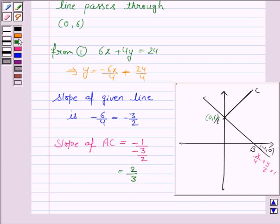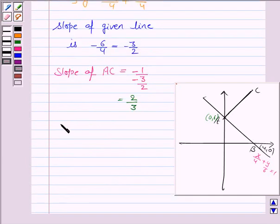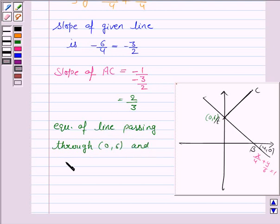Now we know the required line passes through point (0, 6) and has slope 2/3. So the equation of the line passing through (0, 6) with slope 2/3 is given by (y - 6) = 2/3(x - 0).